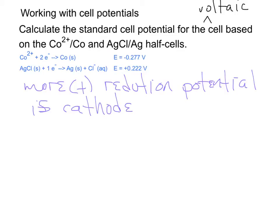So I wouldn't even write on your paper just say that the one that's positive is the cathode, because what if I give you two half cells with two positive reduction potentials?